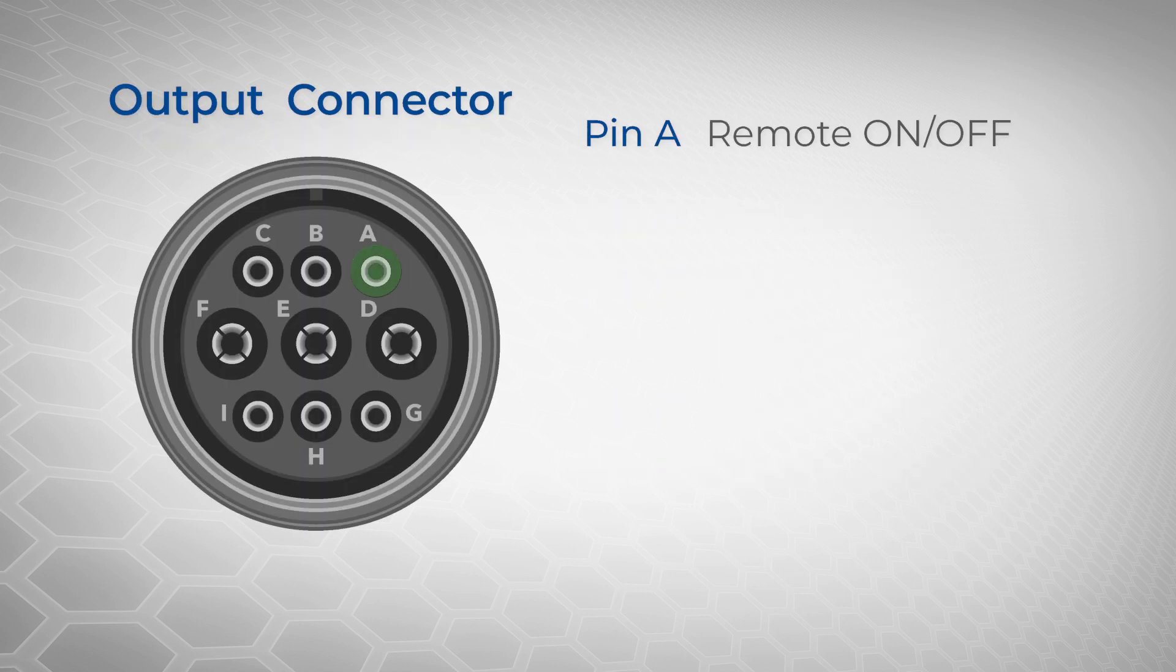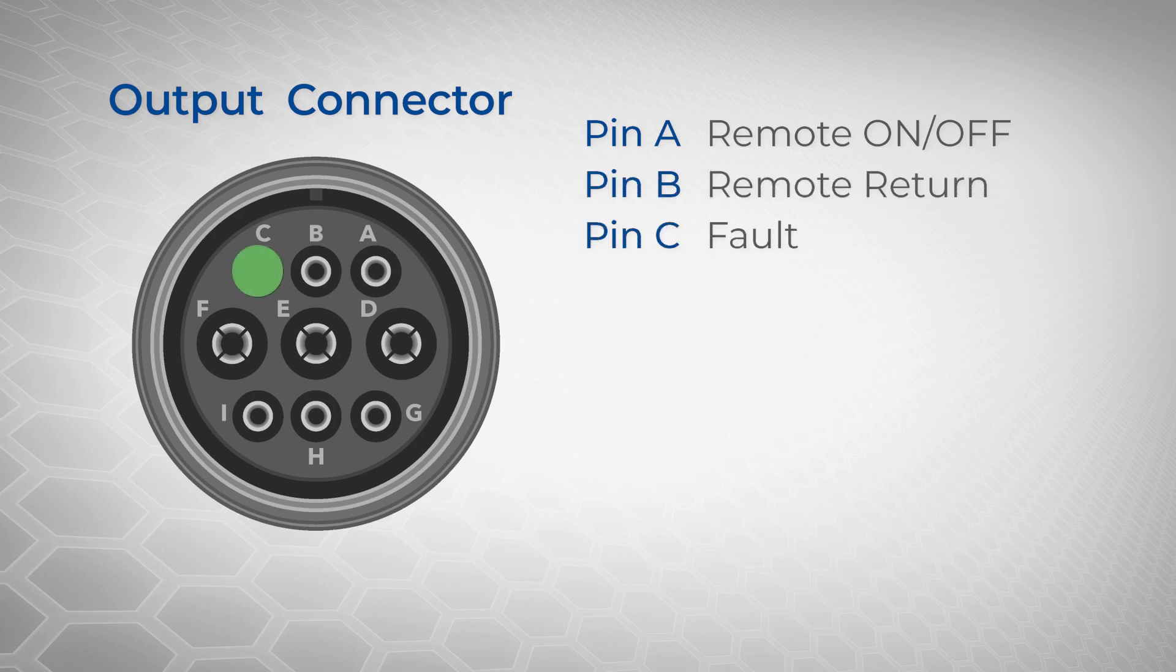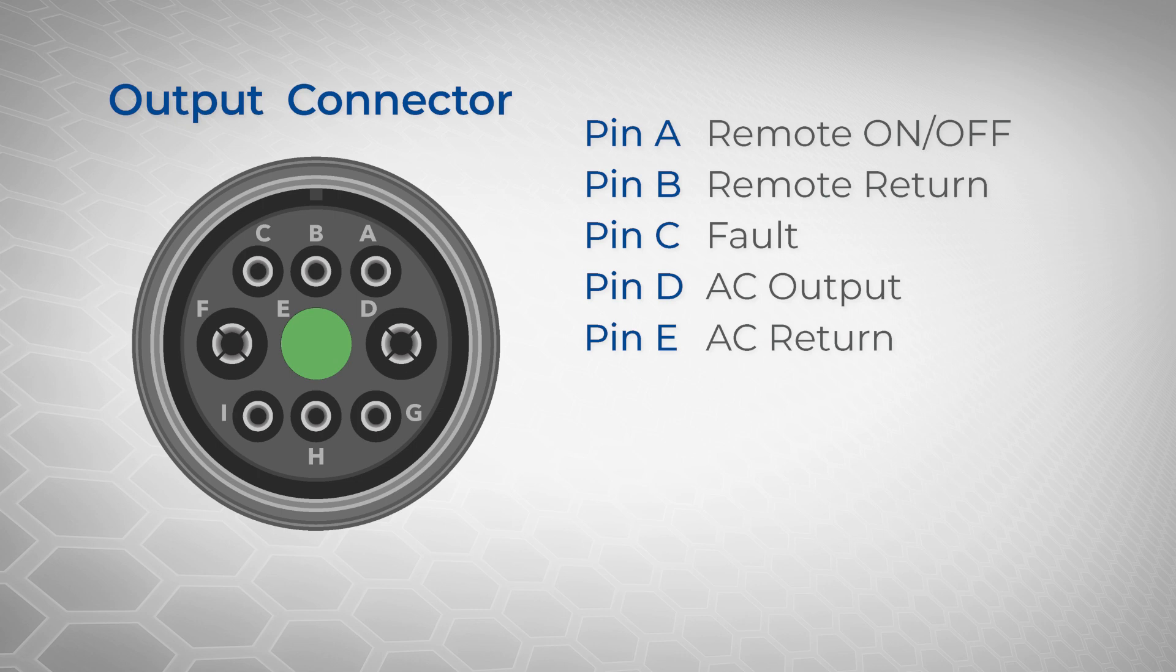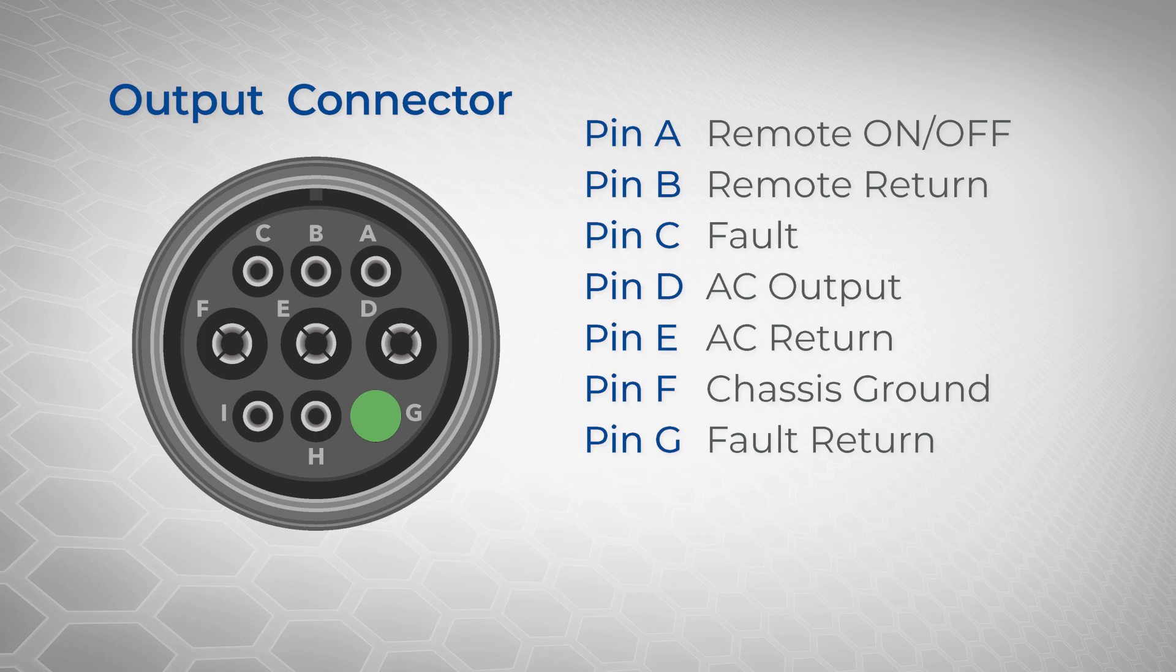On the bottom nine pin output connector, pin A is the remote on off, pin B is the remote return, pin C is the fault, pin D is the AC output, pin E is AC return, pin F is chassis ground, pin G is the fault return, and pins H and I are both spares.